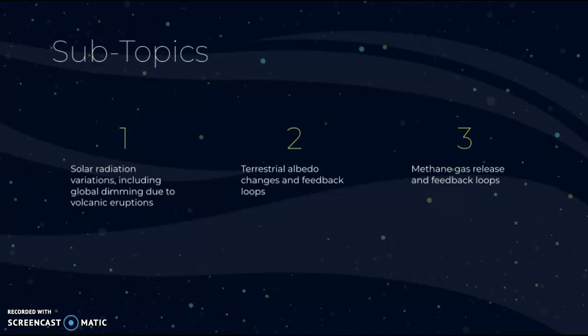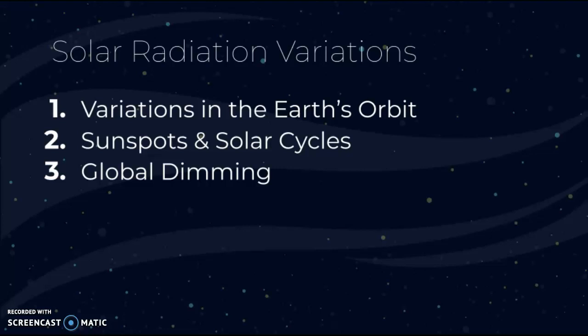First, let's go through solar radiation variations. There are three main subsections: variations in the Earth's orbit, also known as the Milankovitch cycles, which we'll go through in detail; sunspots and solar cycles; and global dimming. We're going to look at these phenomena and how they may impact the global energy balance.